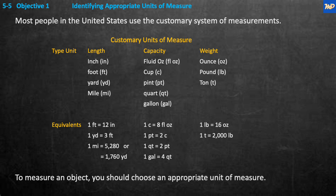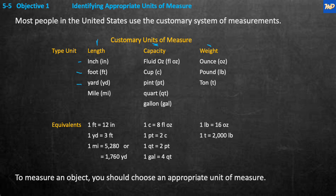Objective one: identifying appropriate units of measure. Most people in the United States use the customary system of measurements. The customary units of measure include length, capacity, and weight. For length, we deal with inches, feet, yards, and miles — these are all very customary here in the United States.